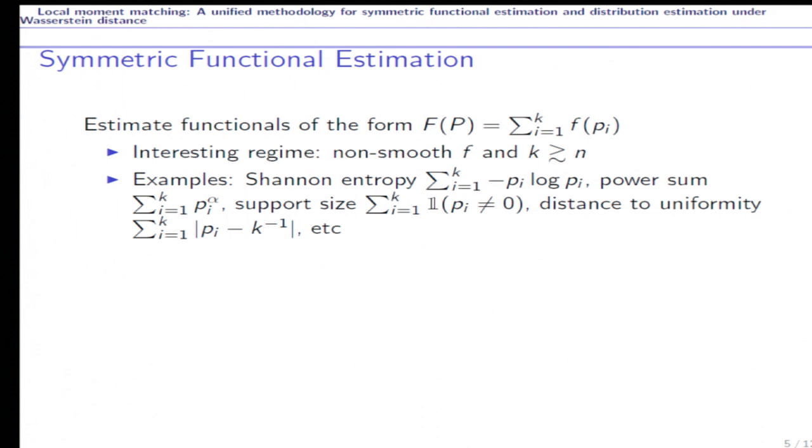Now let's consider the symmetric function estimation problem. We'd like to estimate the functionals of the form capital F of p, which is equal to sum of little f of pi. And to make things interesting, we will assume that the function little f is non-smooth and our parameter, the support size k, is larger than the sample size n. For example, we would like to estimate the Shannon entropy, partition function, support size, and distance to uniformity.